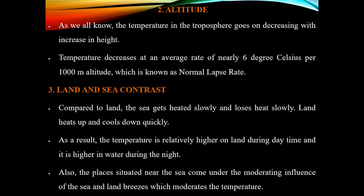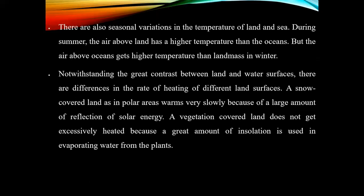The third factor is land and sea contrasts. Compared to land, the sea gets heated slowly and loses heat slowly. Land heats up and cools down quickly because land is in a solid condition and is stable. As a result, the temperature is relatively higher on land during daytime and higher over water during the night. Places situated near the sea come under the moderating influence of sea and land breezes, which moderates the temperature.